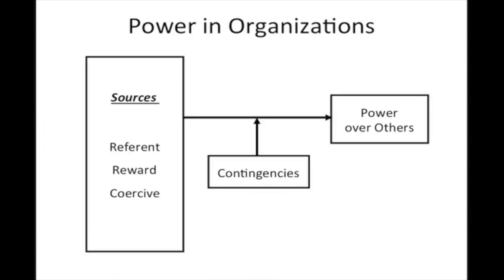First we'll explore the various sources of power. The first one is expert power — an individual's or a work unit's capacity to influence others by possessing knowledge or skills that is valued. Employees gain expert power in a knowledge economy. We hire knowledge workers for what they know and what they can do. People who have expertise in a certain thing have a particular amount of power.